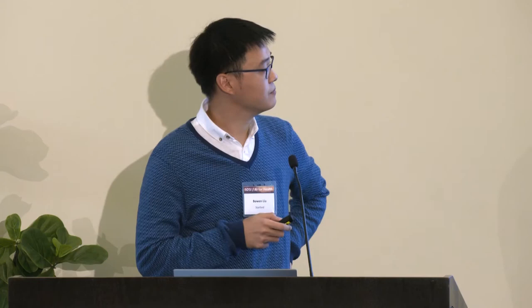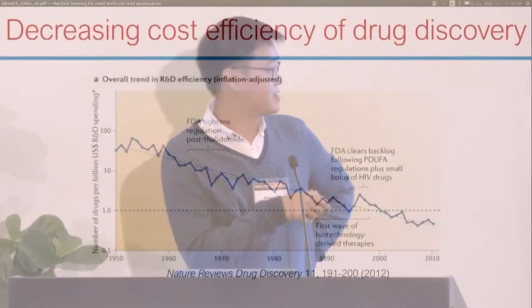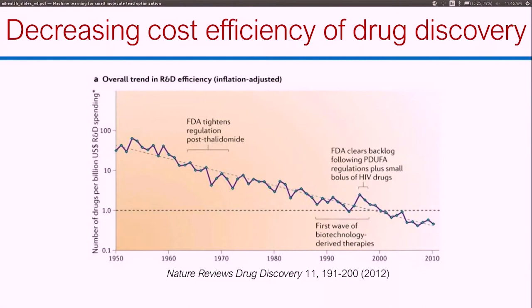I'm sure a lot of us here have probably seen this graph. This graph essentially shows the number of drugs that is developed per billion dollars of R&D spend. And we see that over the past 50 years, this cost efficiency has been decreasing exponentially. There are a lot of reasons for this, but regardless, this motivates us to see if there are tools we can develop to make this process more efficient.